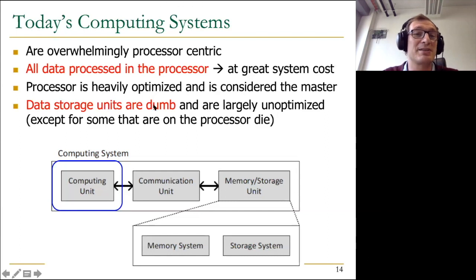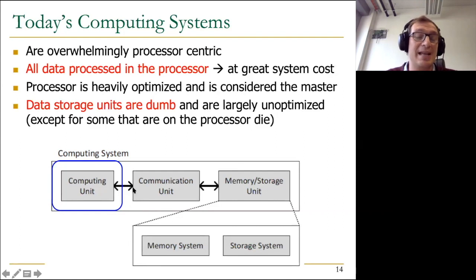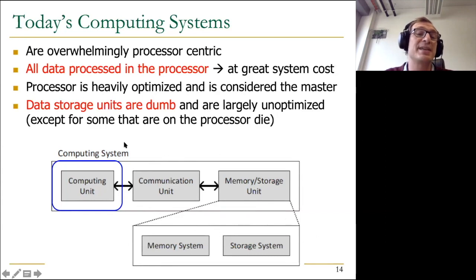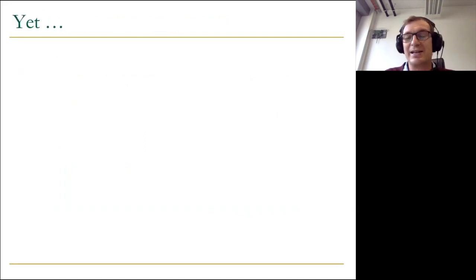This is a problem endemic to the entire system because it's really caused by the fundamental principles of how we design systems today. Processing in memory is going to try to break that — enabling intelligence and the ability to process data in the other units in its most general form.